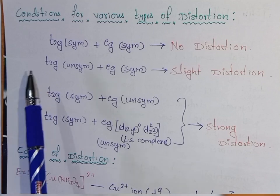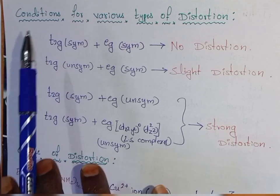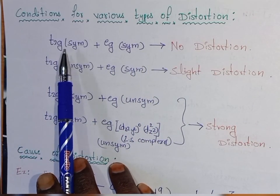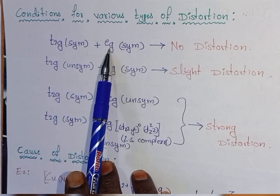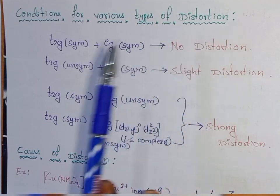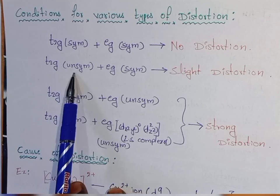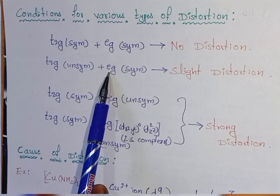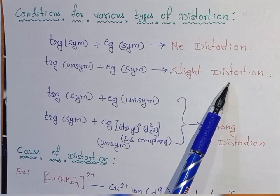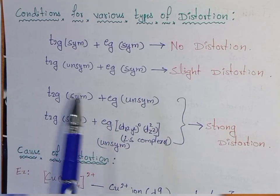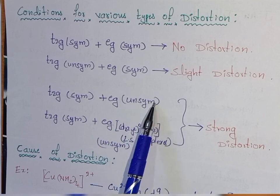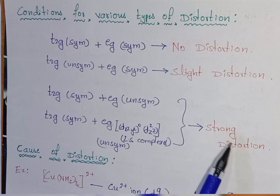Based on the orbital configuration, the conditions for various types of distortion are: if the T2G set of orbitals has a symmetrical configuration and the EG set of orbitals also has a symmetrical configuration, there will be no distortion. When the T2G set of orbitals has an unsymmetrical configuration and the EG set has a symmetrical configuration, there would be slight distortion. When the T2G set has a symmetrical configuration and the EG set has an unsymmetrical configuration, there would be strong distortion.